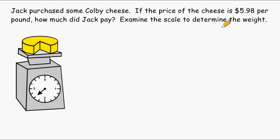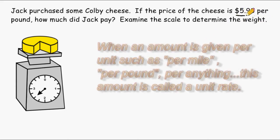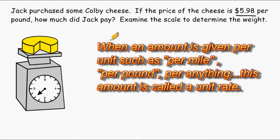Now in this problem, they tell us that this Colby cheese is $5.98 per pound. That means for each pound that Jack purchases, he's going to pay $5.98.